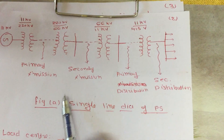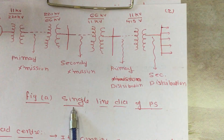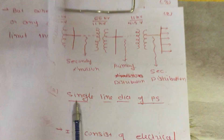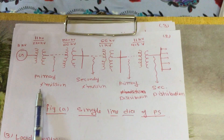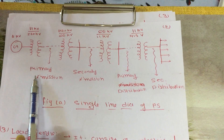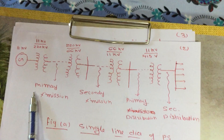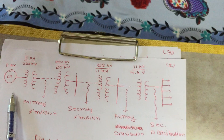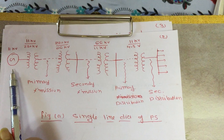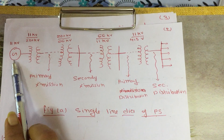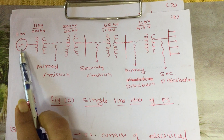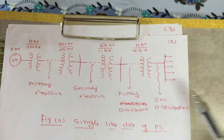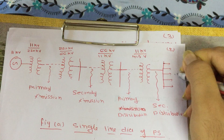Here, for your information, I will represent a single line diagram of the electrical power system so you can see how the transmission and distribution sections are connected to the load center and generator. First of all, this is a generator of 11 KV, and this is the load center.